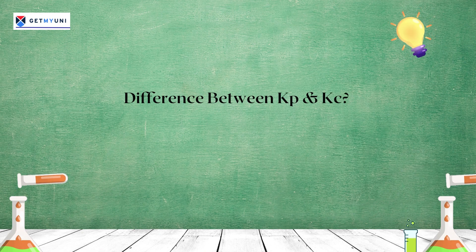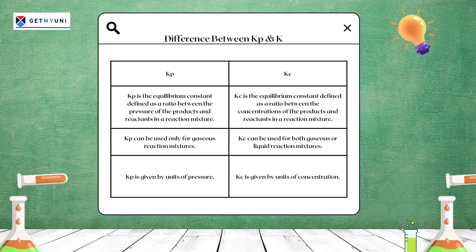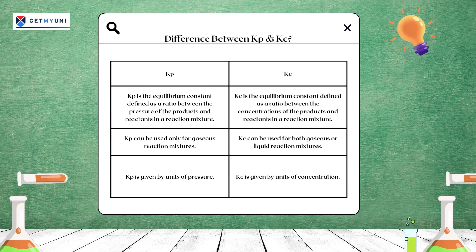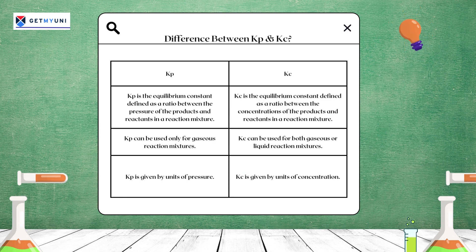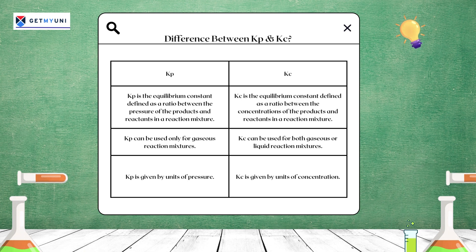The difference between Kp and Kc: Kp is the equilibrium constant defined as a ratio between the pressure of products and reactants in a reaction mixture, while Kc is defined as a ratio between the concentrations of products and reactants. Kp can be used only for gaseous reaction mixtures, whereas Kc can be used for both gaseous and liquid reaction mixtures. Kp is given in units of pressure and Kc is given in units of concentration.